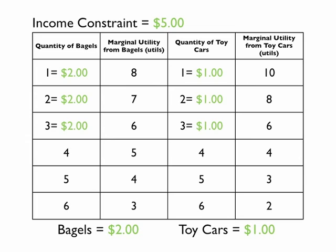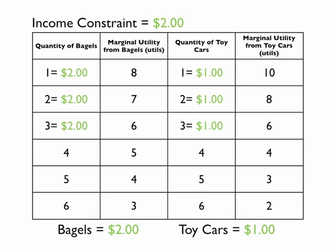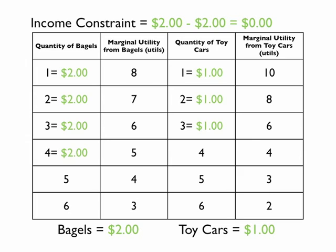If you purchase the third quantity of each good, an additional $3 will be spent and you have $2 left to spend. You can then purchase the fourth bagel at $2, and you now have $0 left to spend.